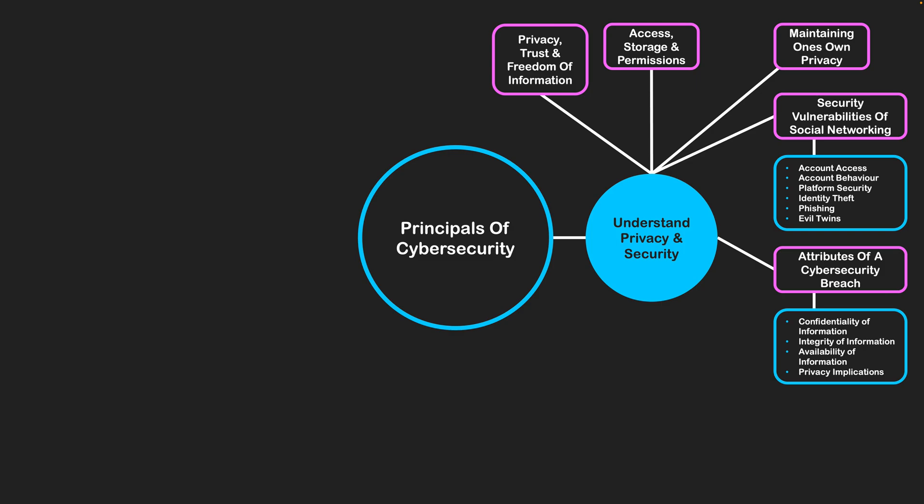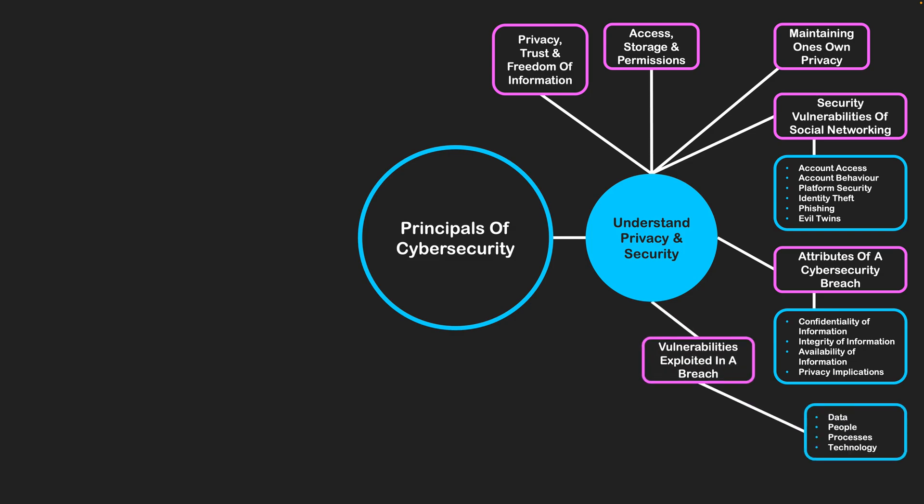We also have to check the integrity of our information — did the malicious party change any of our data? Users relying on our information may start receiving incorrect or offensive data that could be damaging to our enterprise. Some attackers try to take a system out from functioning entirely, affecting availability of information through things like DDoS attacks that overwhelm the website and cause it to crash, taking information offline. Finally, we must consider whether people's privacy has been breached and what measures they need to take to stay secure.